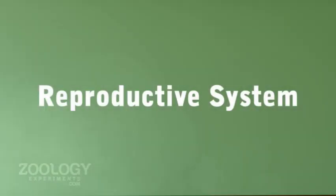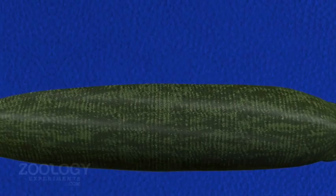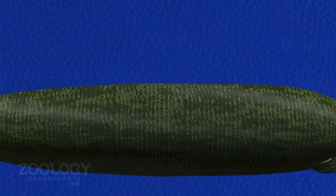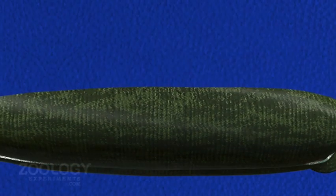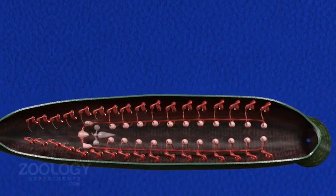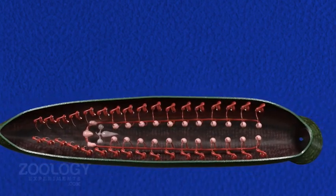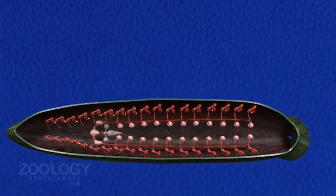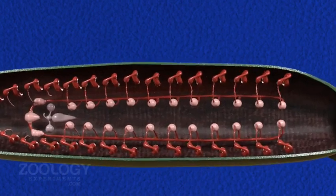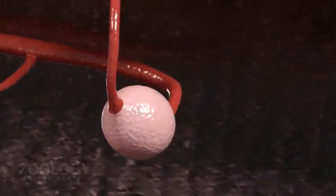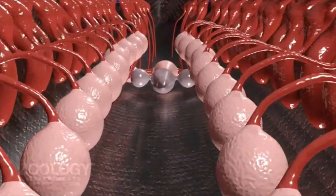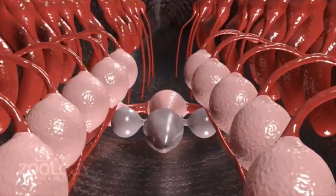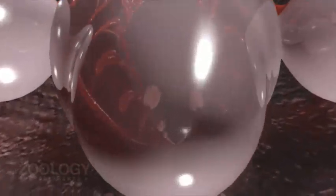Reproductive system, which is hermaphroditic. Each individual contains a complete set of well differentiated male and female reproductive organs. They never show self-fertilization. Cross-fertilization takes place by copulation.